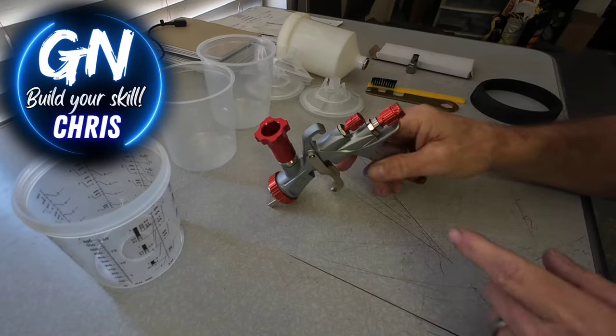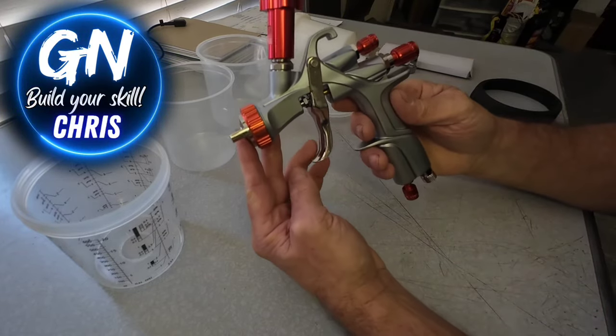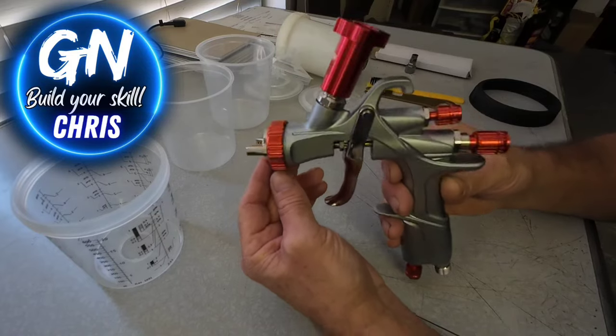Let's talk a little bit about low volume, low pressure paint guns. This is a low volume, low pressure paint gun. This is the YT-160.